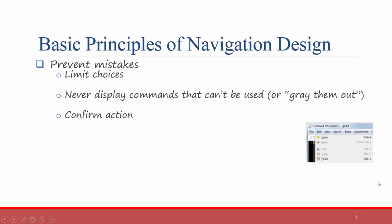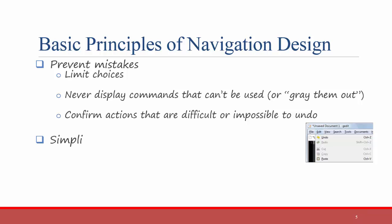You can also confirm actions that are difficult or impossible to undo. To keep your user happy, give them confirmation screens or ask them if they really want to do what they're about to do. For example, when you close Microsoft Word, it asks you if you want to save the document that you've been working on. Beyond trying to prevent mistakes, you should also try to simplify recovery from those mistakes. In a lot of systems, an undo option is provided to the user.